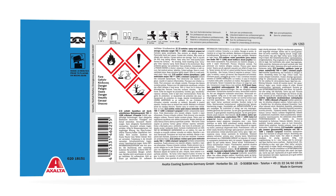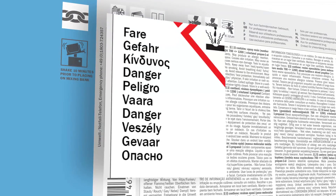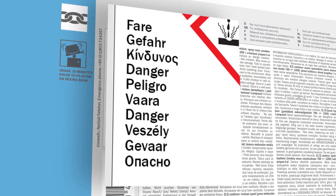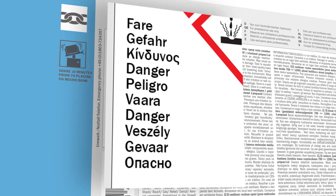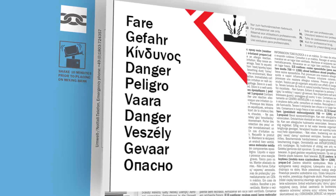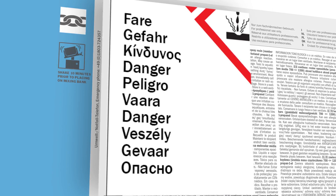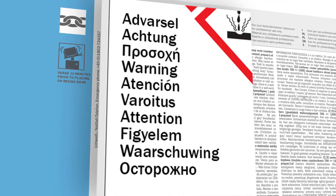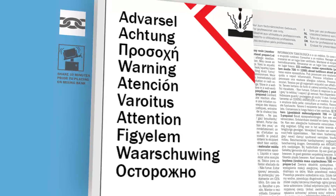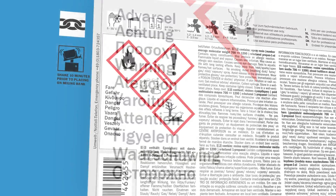Let's start with the signal word. The use of a signal word on the label indicates the severity of the potential hazard. There are two levels of severity: danger for major hazards and warning for less extreme situations. Only one signal word will be used on each label.